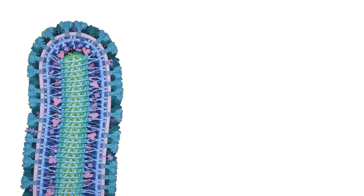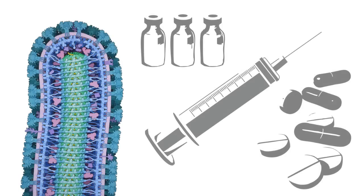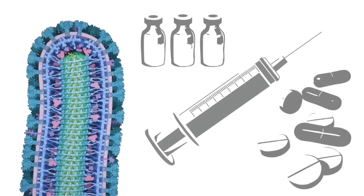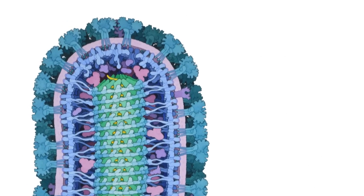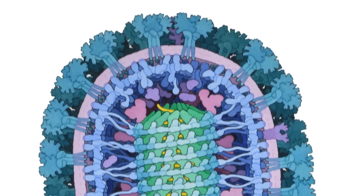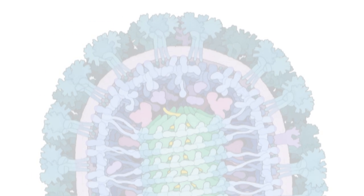When we know the shape and structure of proteins, we can use that information to discover drugs and vaccines to disrupt their function. The more we understand about the structure of Ebola virus proteins, the closer we are to slowing or stopping the spread of the disease.